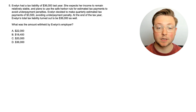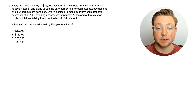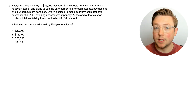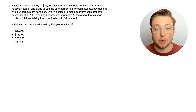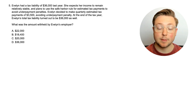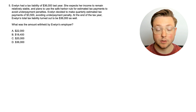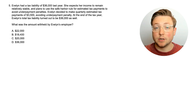Here is question five. Evelyn had a tax liability of $36,000 last year. She expects her income to remain relatively stable and plans to use the safe harbor rule for estimated tax payments to avoid underpayment penalties. The safe harbor rule here refers to making the minimum of 100% of last year or 90% of the current year. Evelyn made quarterly estimated tax payments of $3,500, avoiding the underpayment penalty. At the end of the tax year, Evelyn's total tax liability turned out to be $36,000 as well.